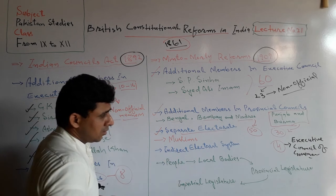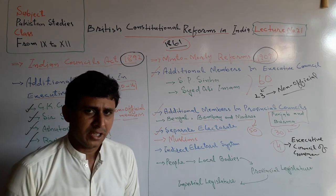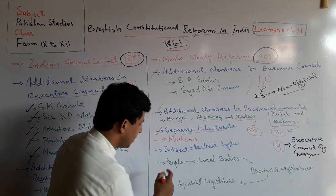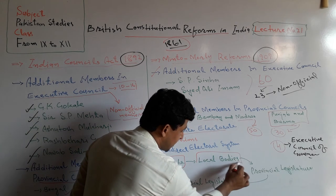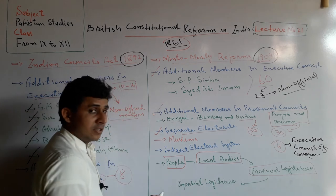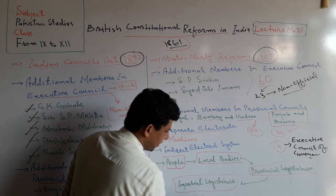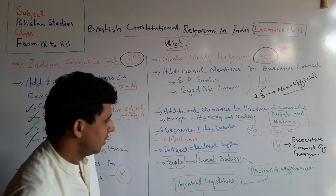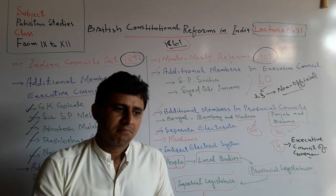Another feature was the indirect electoral system introduced in the Indian subcontinent by the Minto-Morley Reforms 1909. Under this system, the public elected local bodies, local bodies elected provincial legislatures, and provincial legislatures fed into the central council under the Governor General. Provincial legislatures were under governors, and local bodies were the representatives of the public — the native people of the Indian subcontinent.